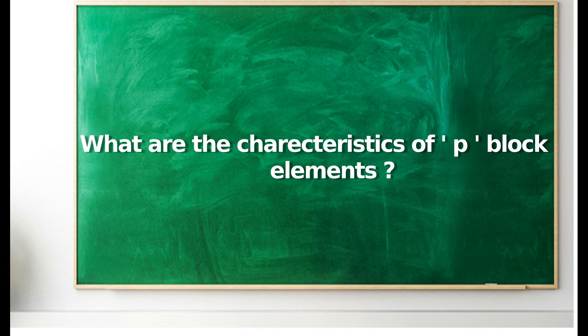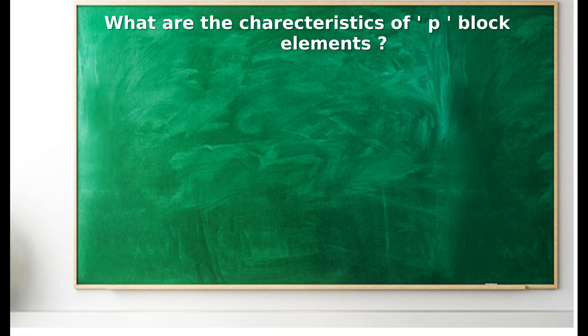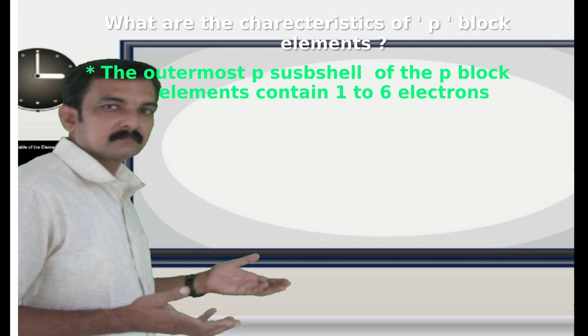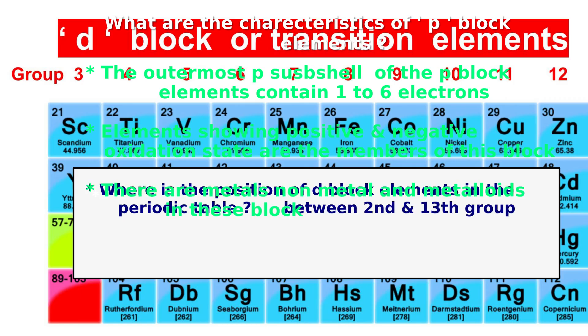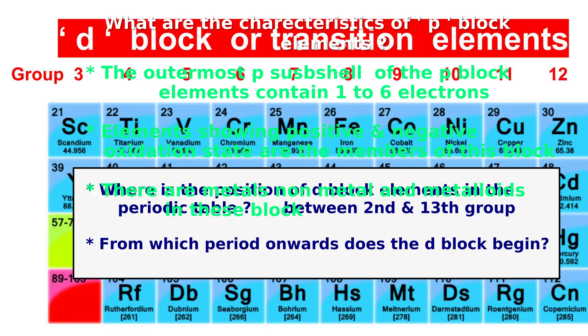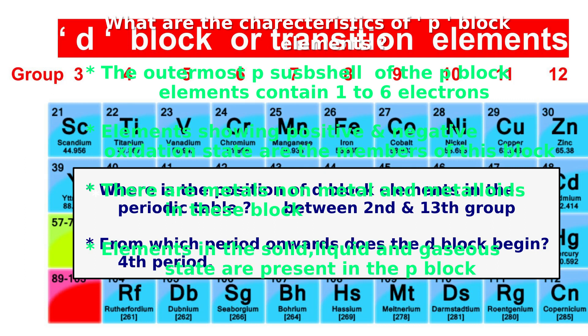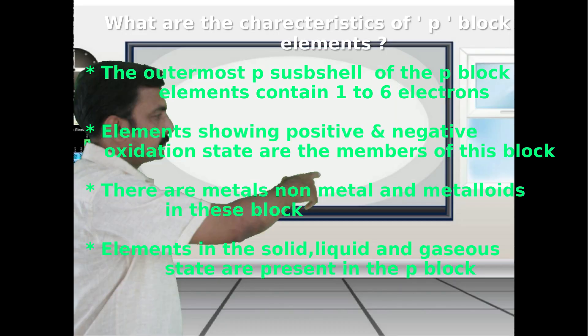The characteristics of p-block elements: the outermost sub-shell contains 1 to 6 electrons. Elements in this block show both positive and negative oxidation states. There are metals, non-metals, and metalloids in this block. Elements in solid, liquid, and gaseous states are all present in the p-block.